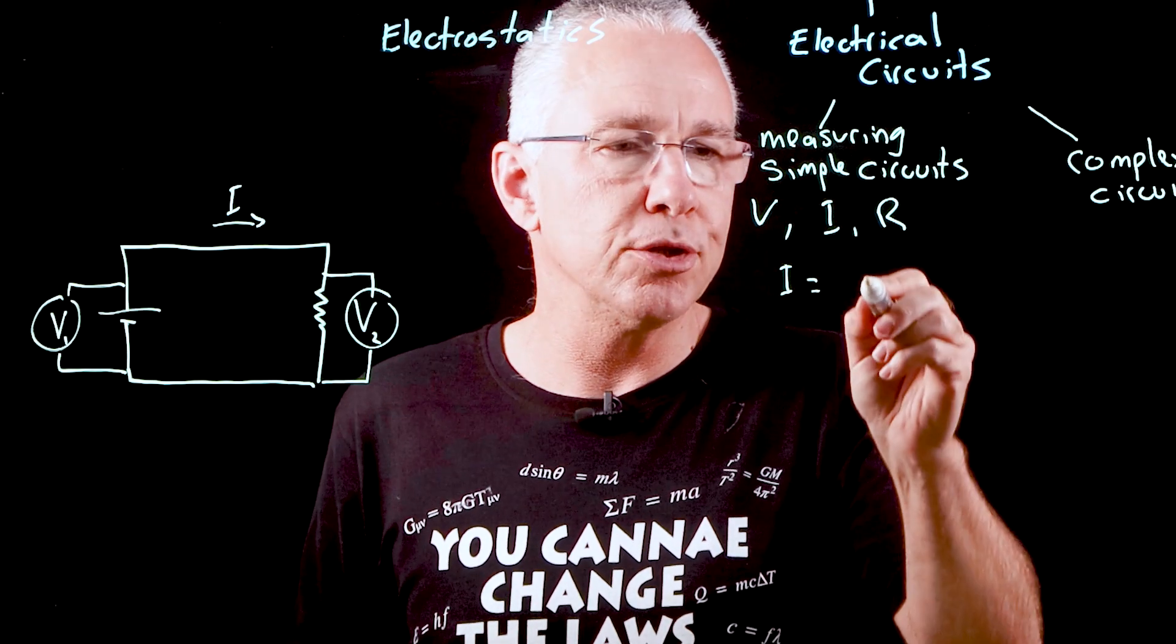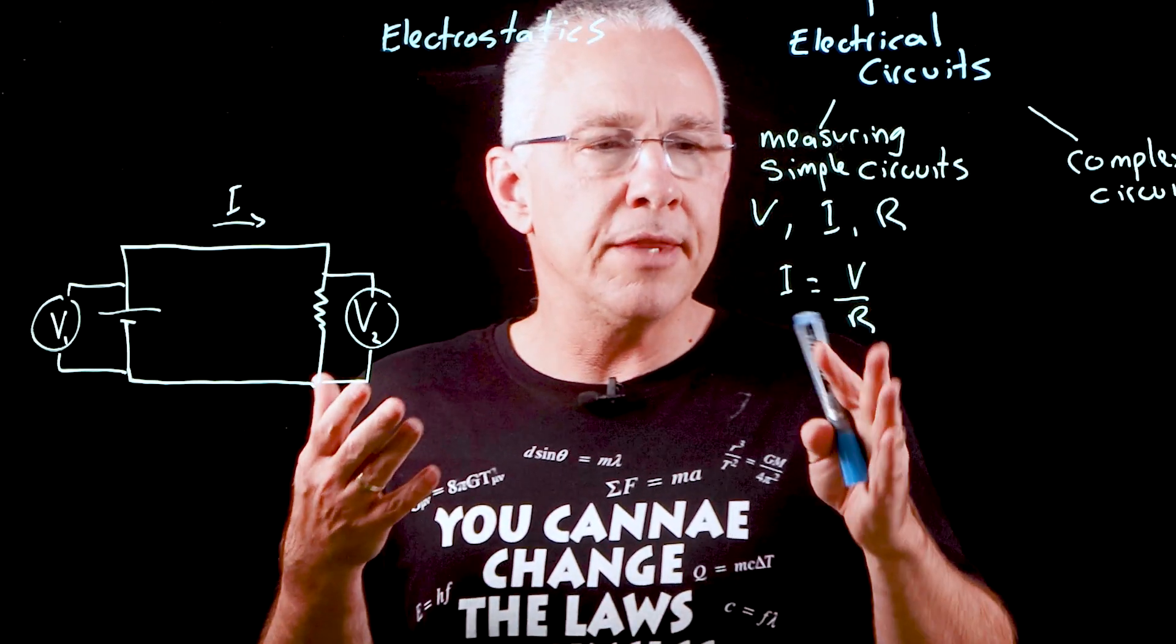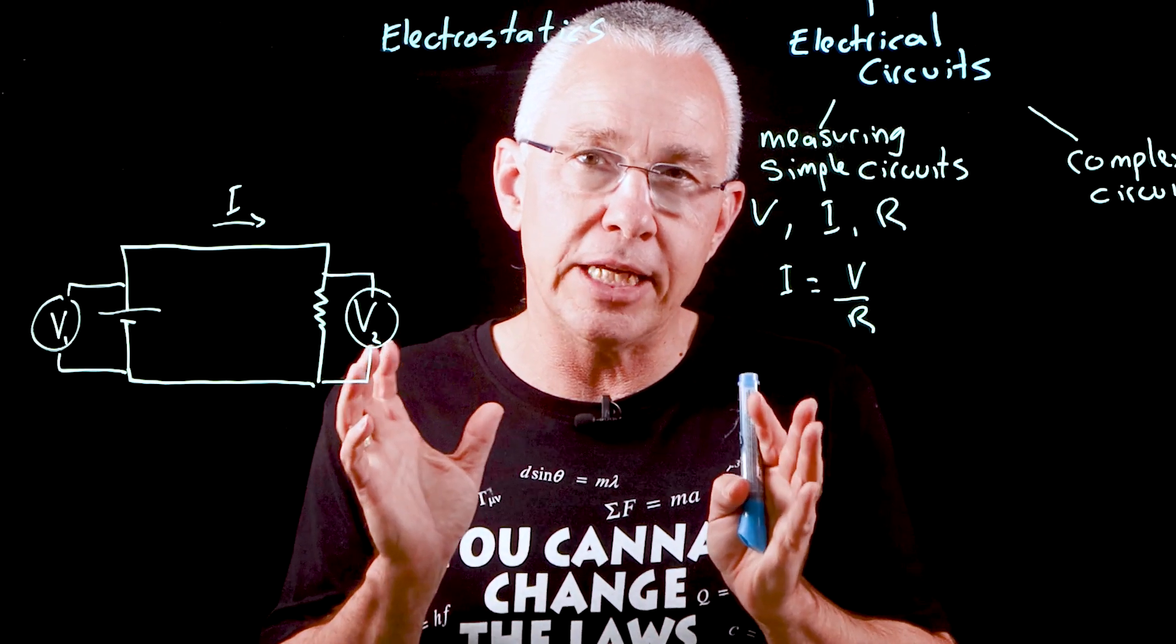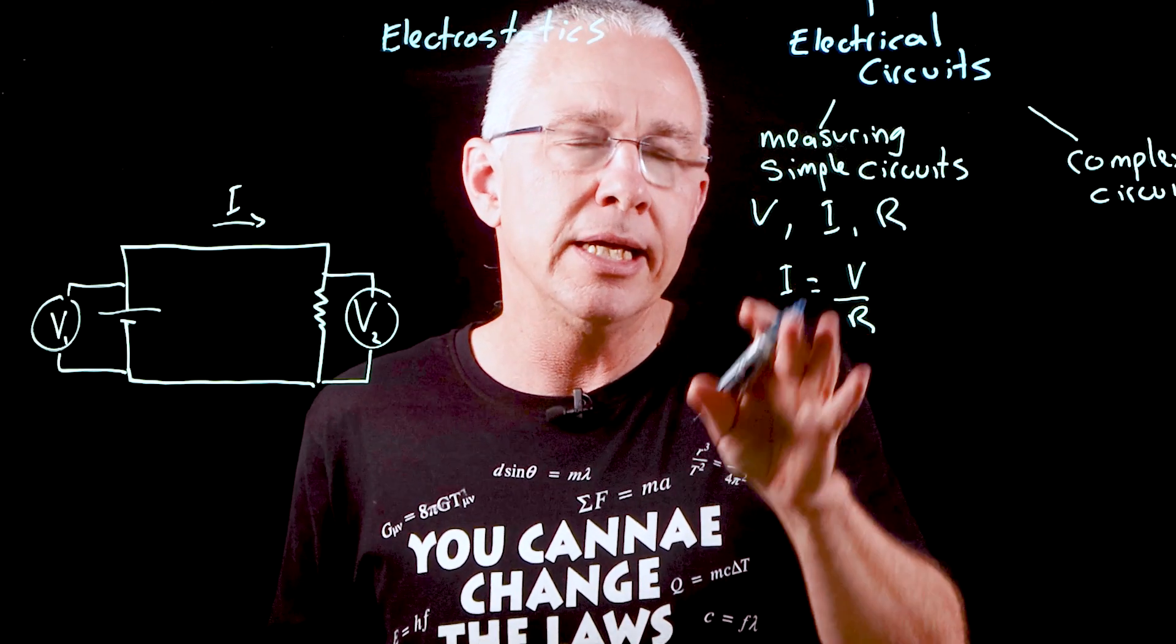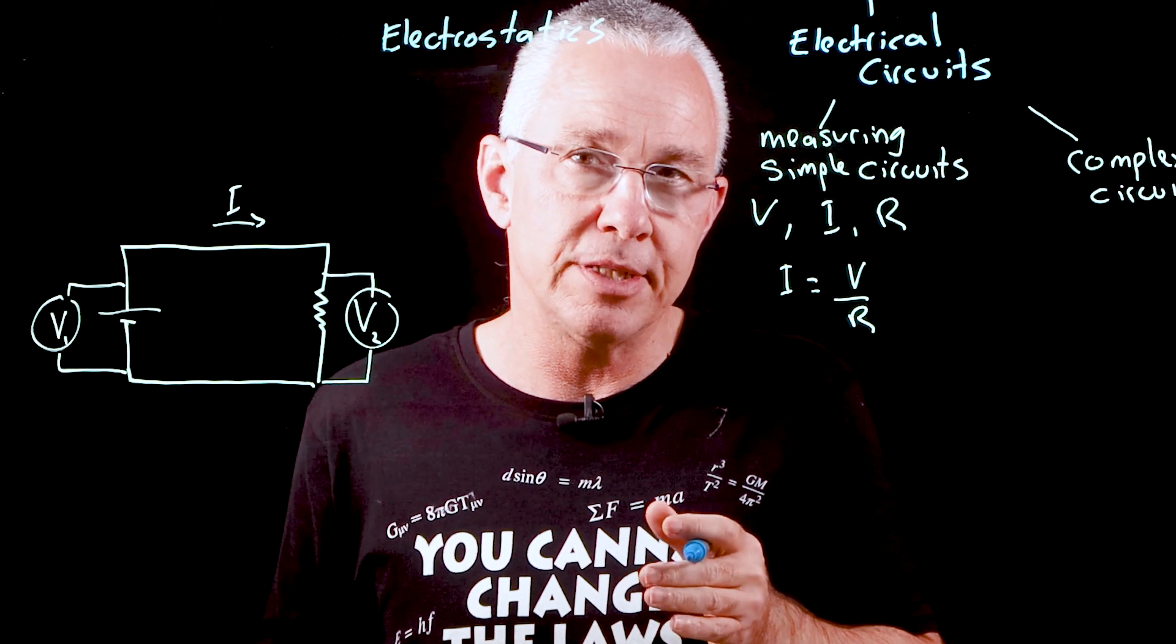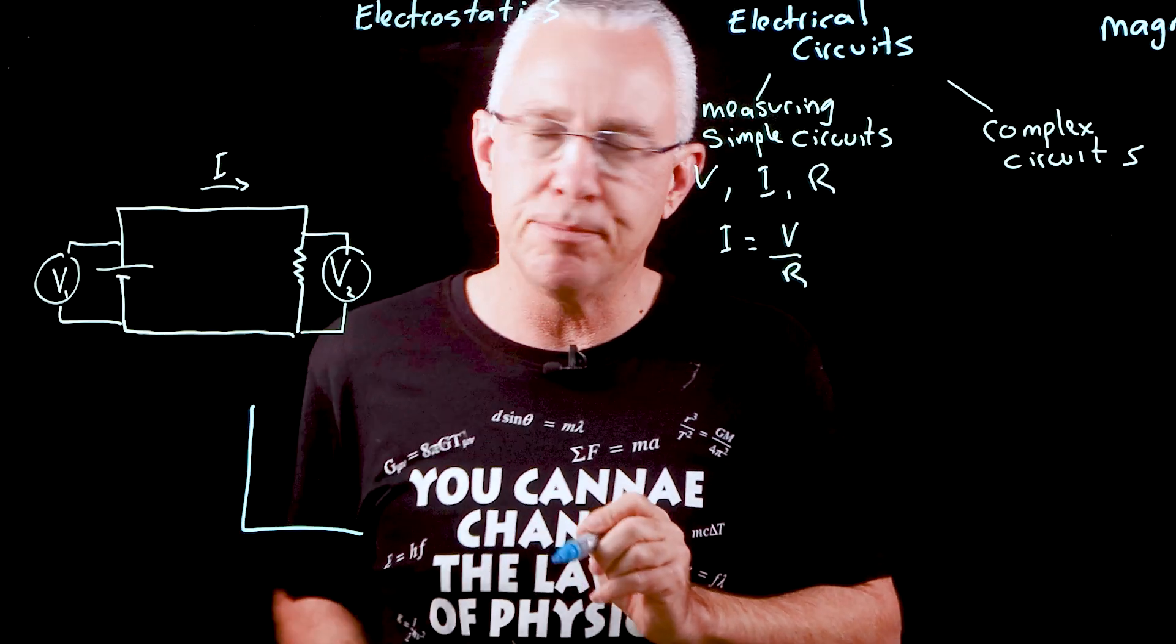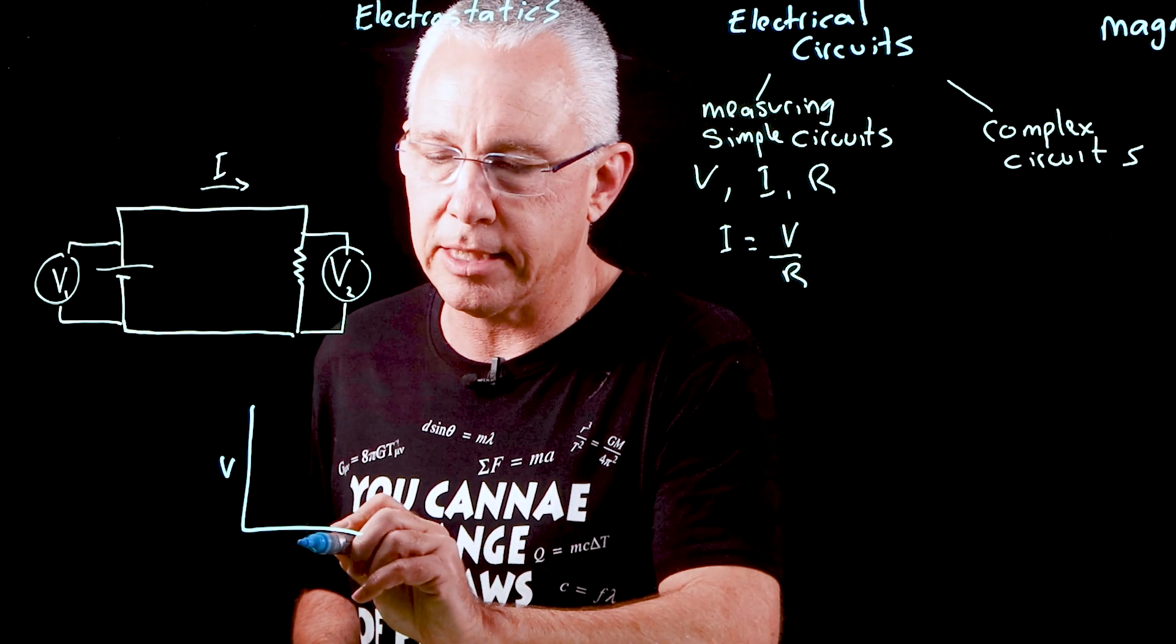As a result, we can form a relationship between these three things: the current generated in my simple circuit is proportional to the voltage and inversely proportional to the resistance. This is often referred to as Ohm's law. If I were to graph voltage on the y-axis and current on the x-axis, I might get a graph that looks something like this.